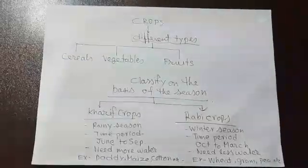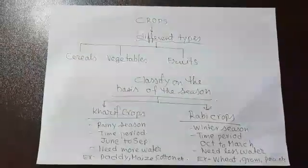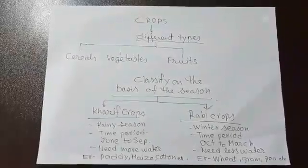The two groups are Kharif crops and Rabi crops. As you can see in the chart, Kharif crops are grown from June to September — that is the rainy season. That is why Kharif crops need more water. Examples of Kharif crops are paddy, maize, and cotton.